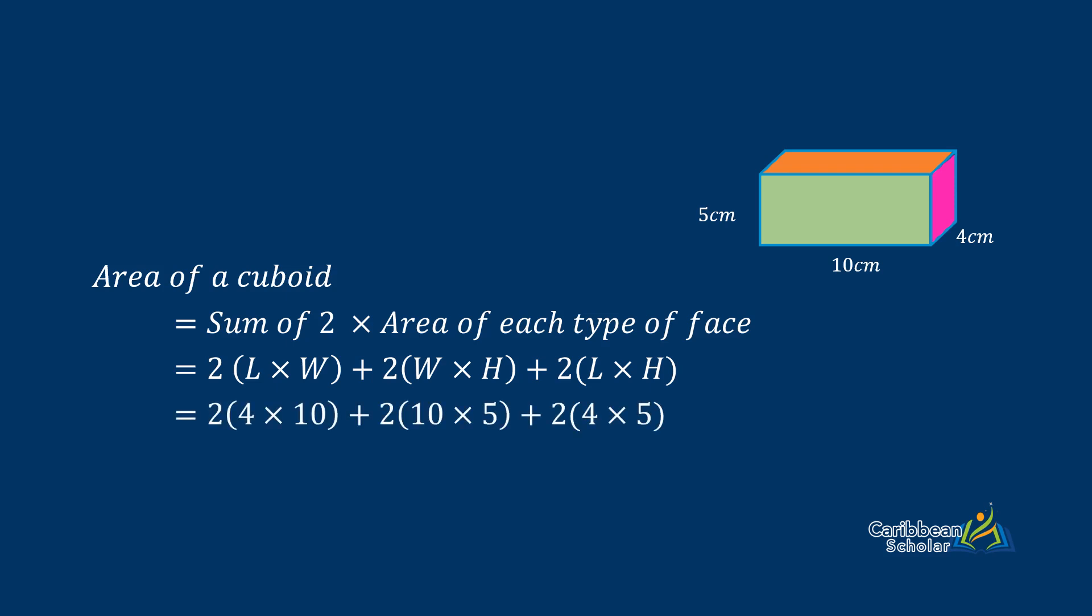So we get two times four times ten plus two by ten times five plus two times four times five, and this gives us 80 plus 100 plus 40, which finally gives 220 centimeters squared.